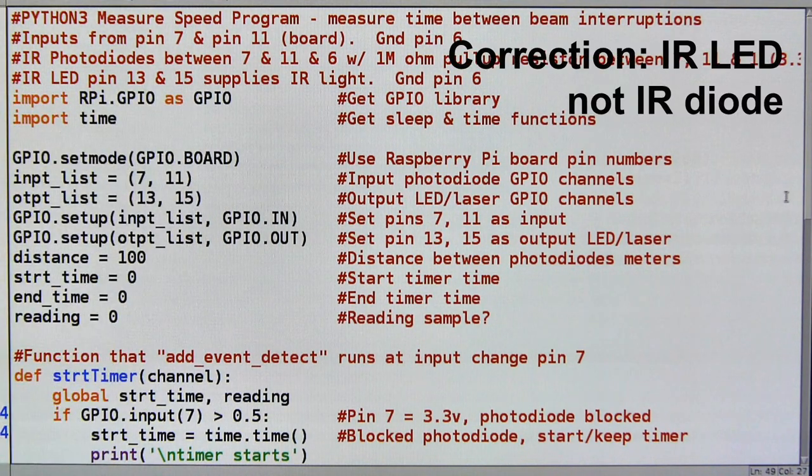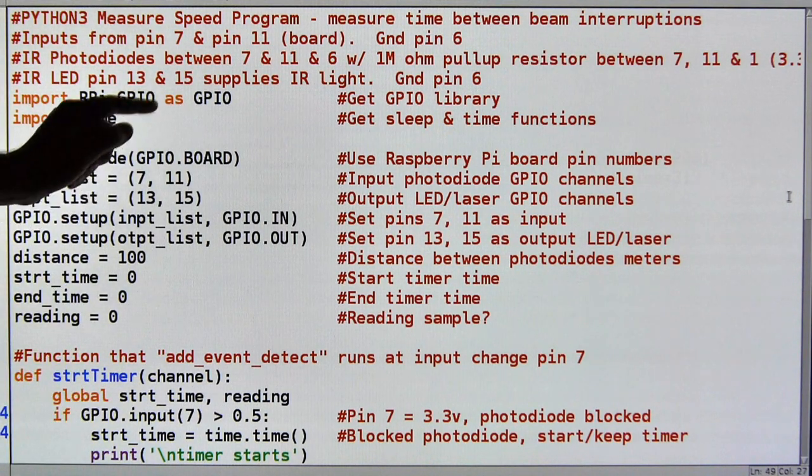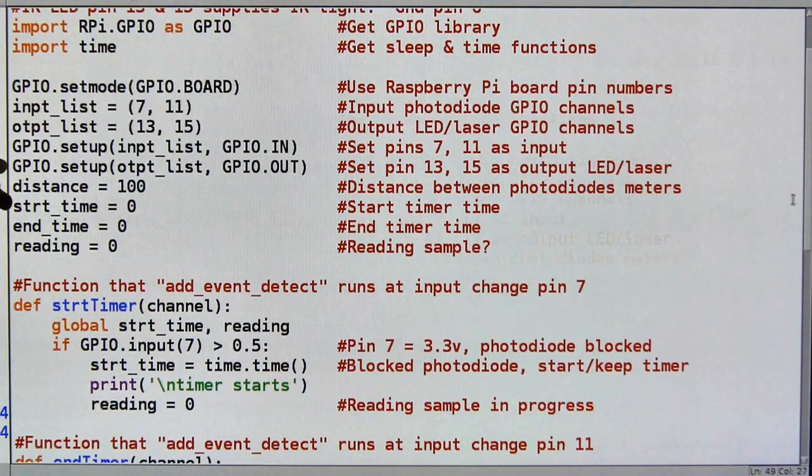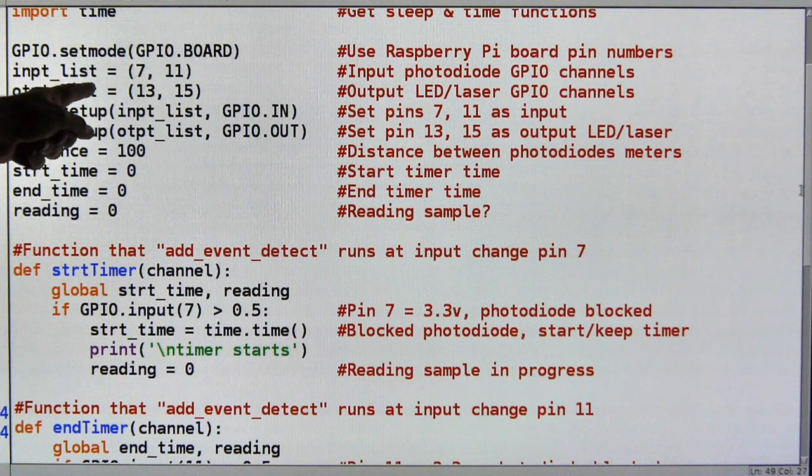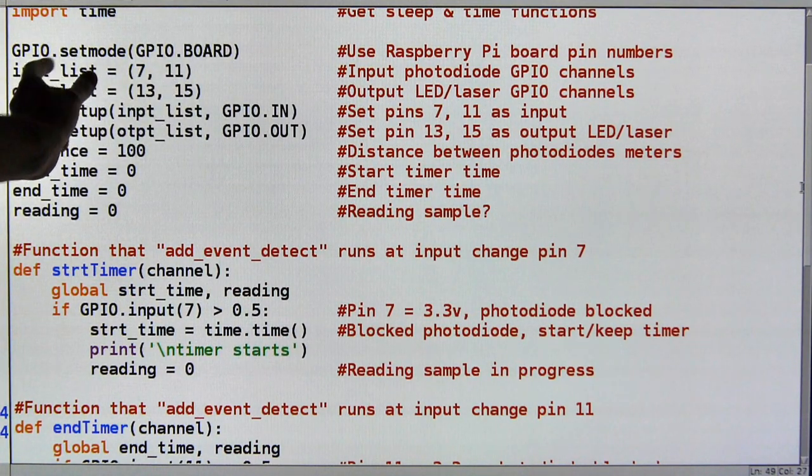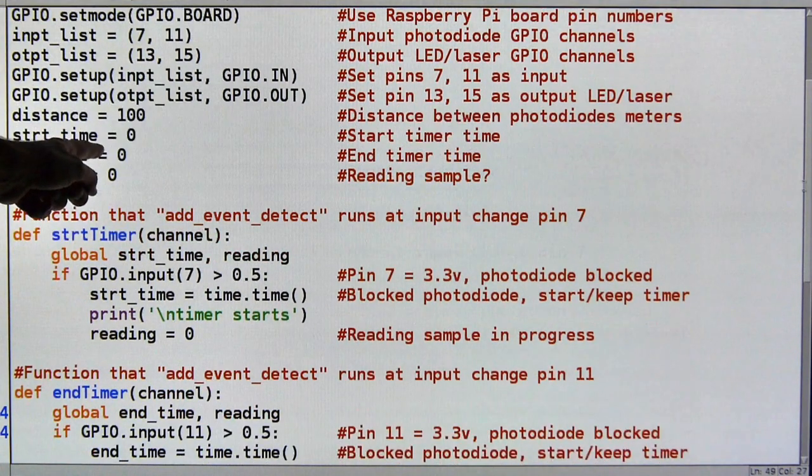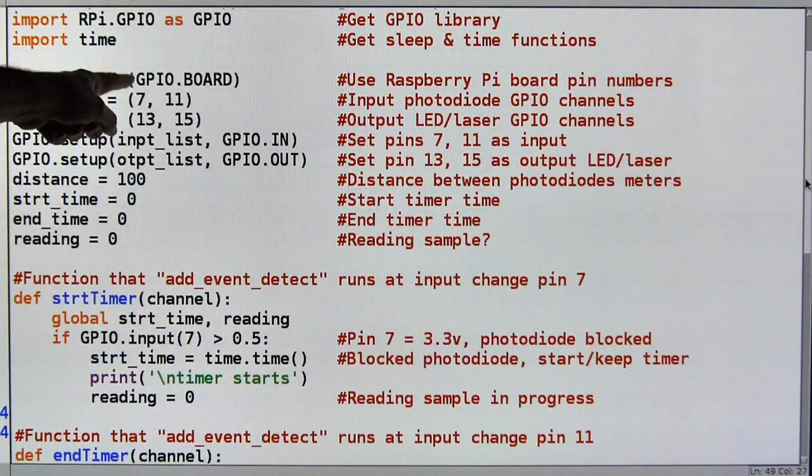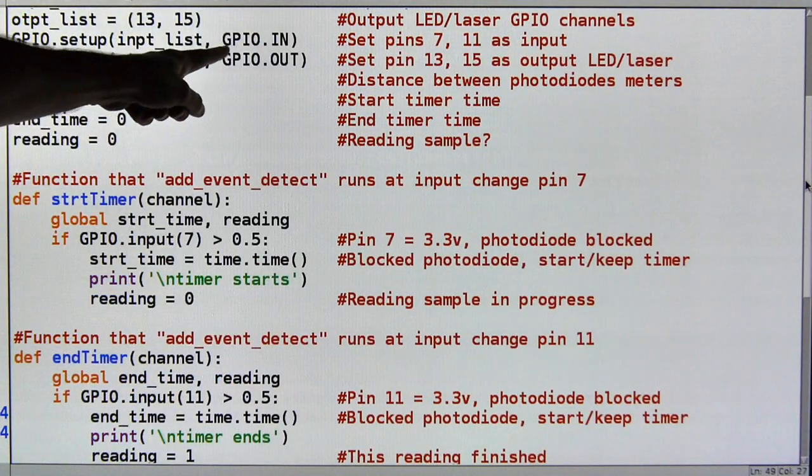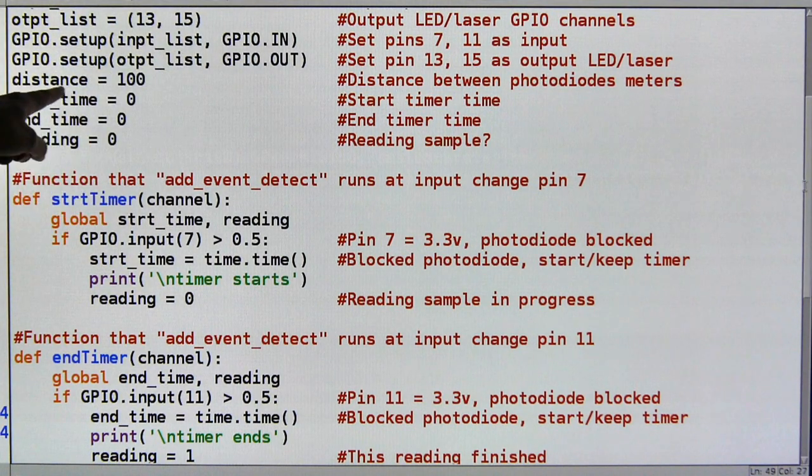Import the GPIO as typical as usual. So we can use the pin numbering. Import the time function. Because I need sleep. And I need to use the timer. Down here GPIO board mode. And my input list. I'm going to use two inputs. I'm going to put them in this list. Just to make it a little bit cleaner. I'm going to use two outputs. 13 and 15. I'm going to put them in the output list. And that way when I do my GPIO setup. I just call the input list. Which is 7 and 11. And set those as input. And then my output list. 13 and 15 is out. My distance I'm setting is 100 meters. I'm assuming we're having a 100 yard dash here.